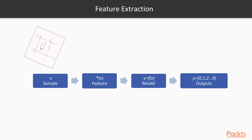A core part of this is that the original input variables are typically pre-processed to transform them into some new space of variables, where the pattern recognition problem will be easier to solve. For example, the original images have actually been translated, scaled, and rotated such that each digit is normalized — meaning it's uniform across the various classified examples and contained within a single box of a fixed size. This reduces the variability within each digit class, making it easier for a subsequent pattern recognition algorithm to distinguish between different classes. This pre-processing stage is called feature extraction.